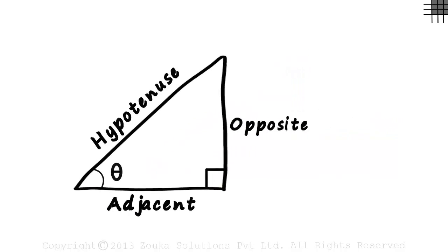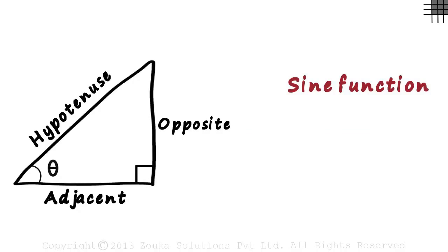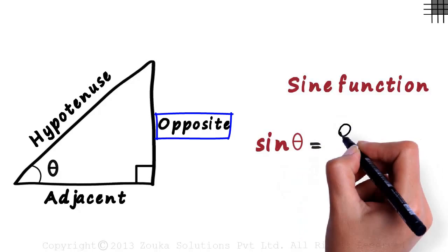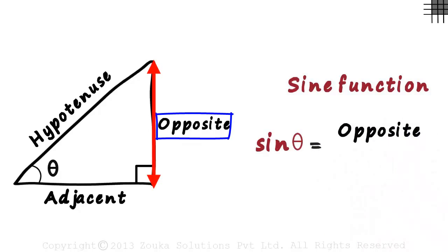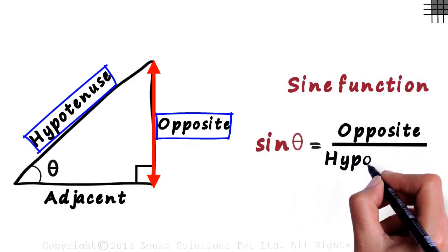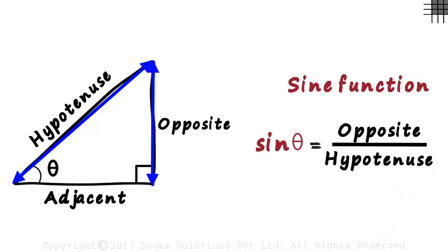Now we are ready to understand the sine function. We will look at the sine of our reference angle. The sine of angle theta is written as sin θ. Observe that we do not write the E. Sin θ will always equal the opposite side divided by the hypotenuse. Each of these sides will have a length, so the sine of this angle gives us a numerical value.